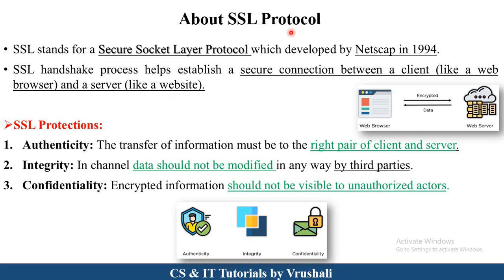SSL protocol provides three types of protections. First, authenticity. Second, integrity. And third, confidentiality. Authenticity means SSL protocol ensures that there is the right pair of client and server — meaning there is a real client and a real server, with no fake visitors.